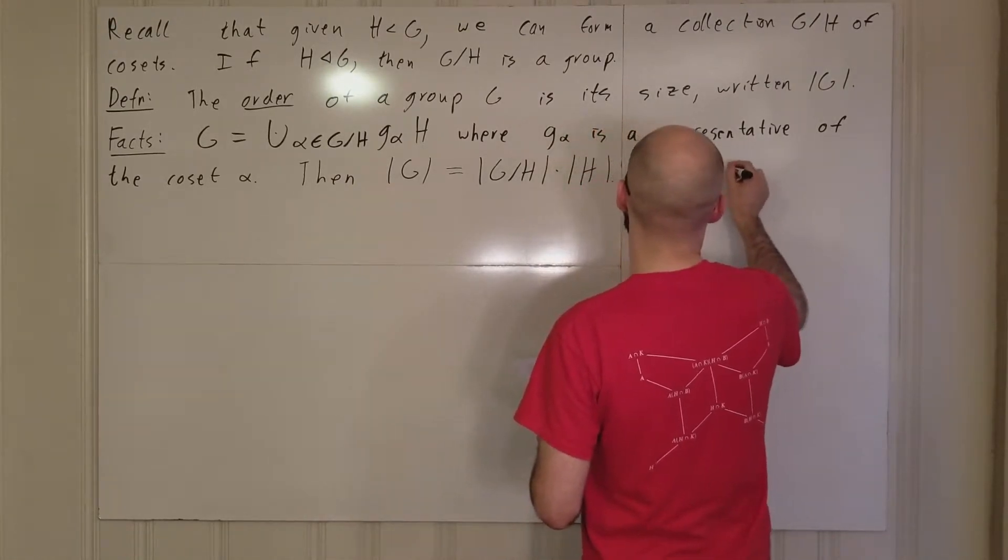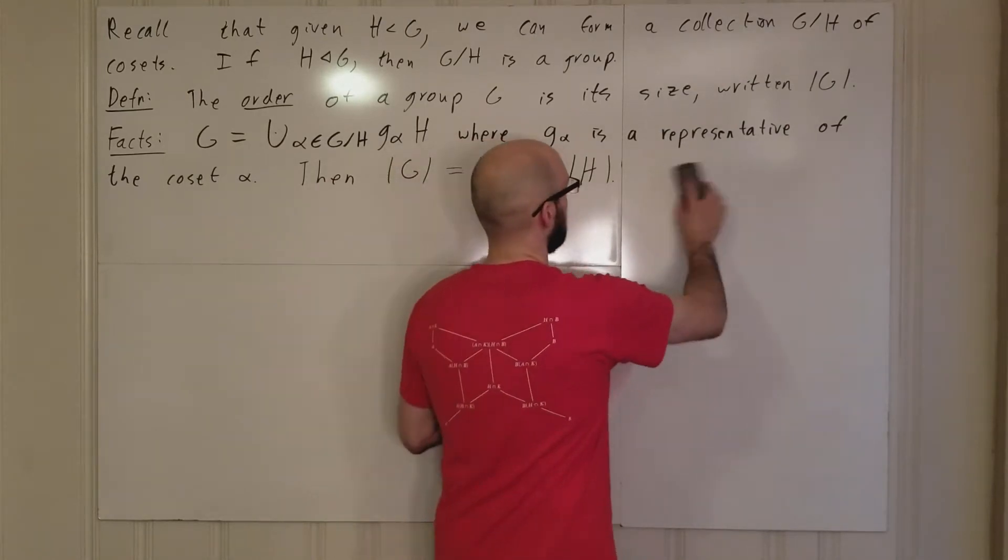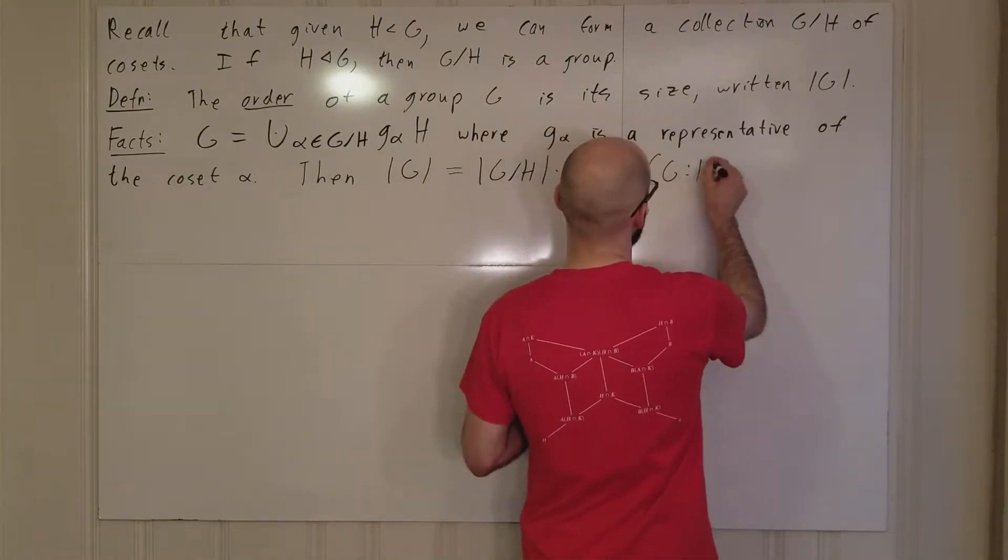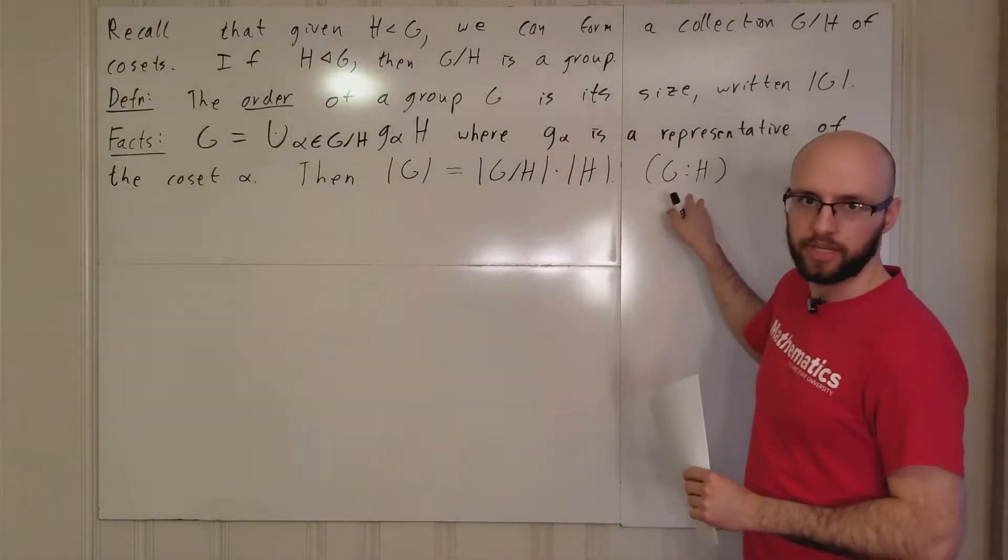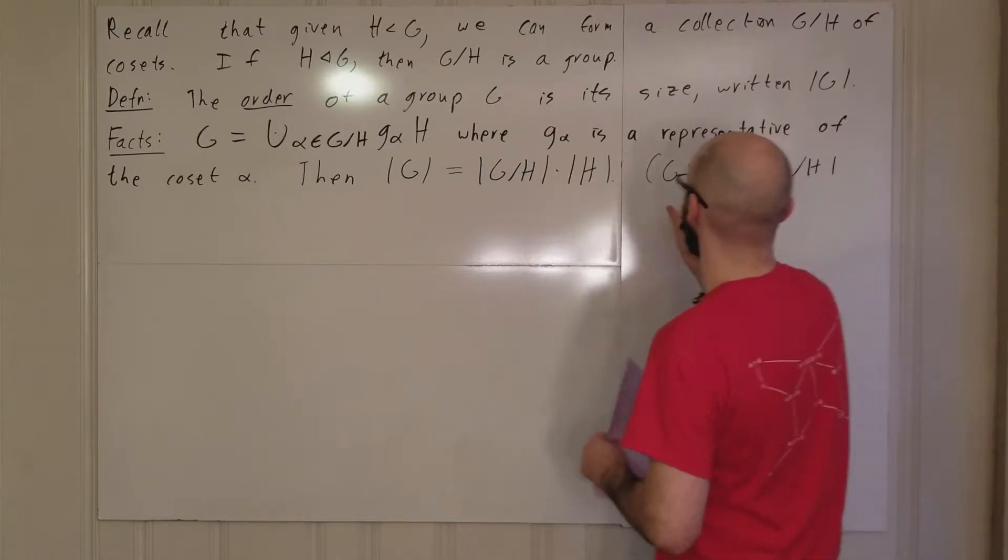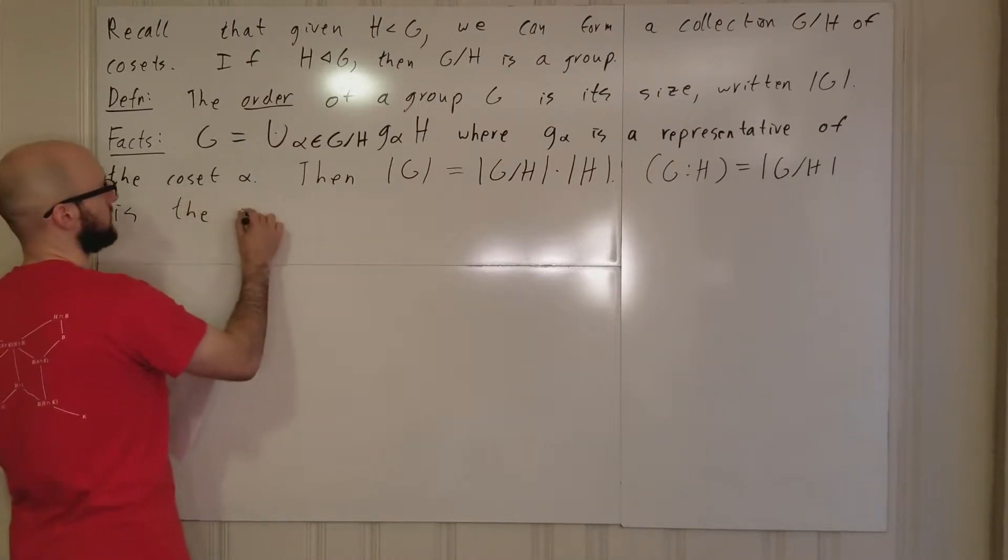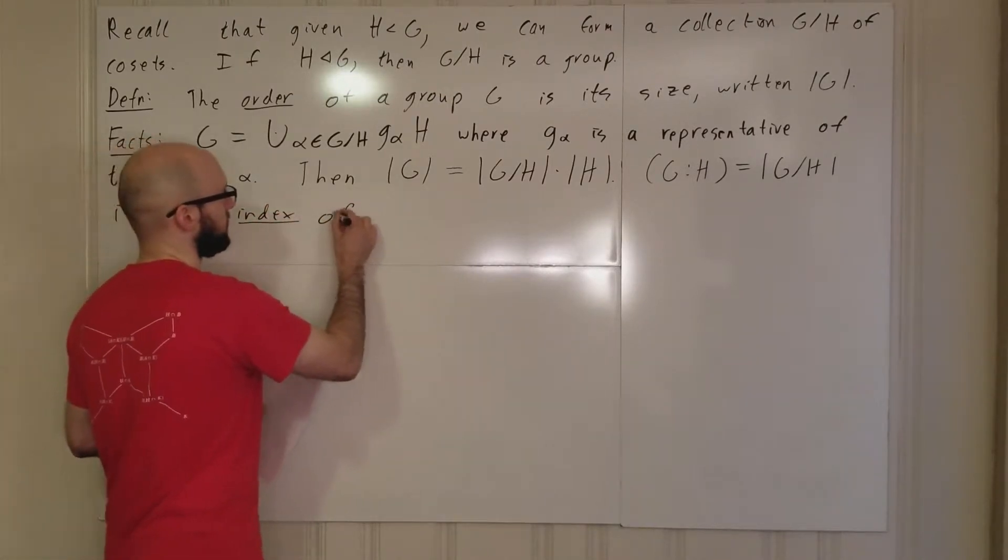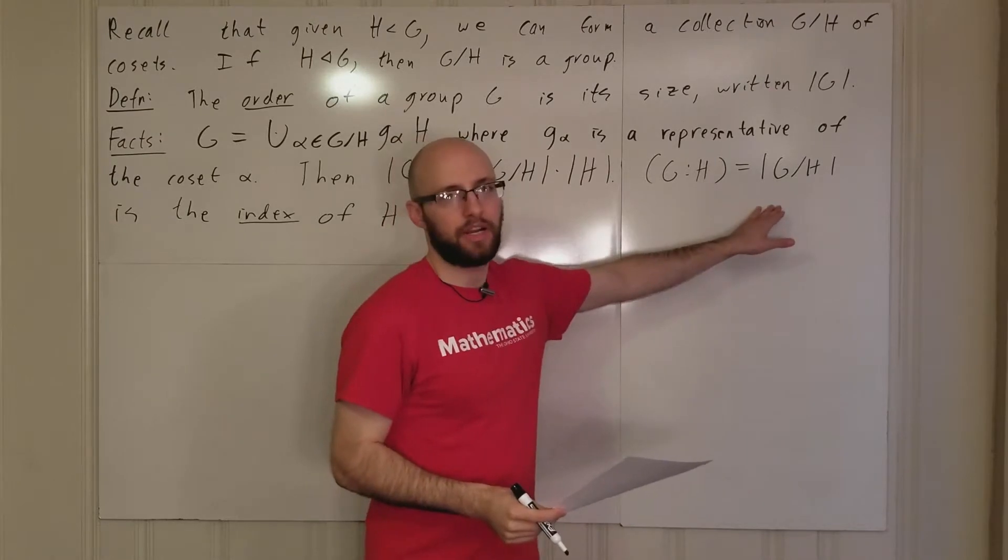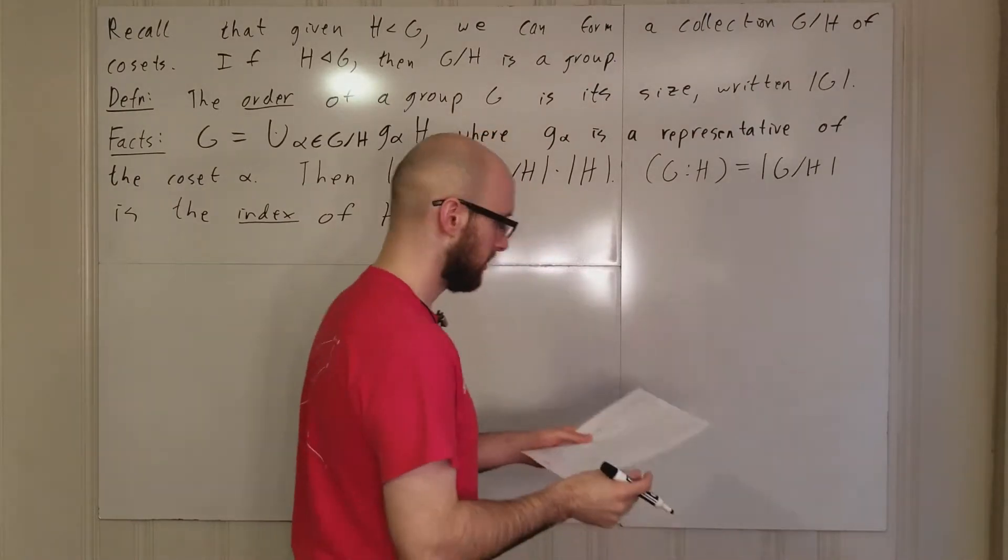We also have a definition. The number of cosets in G that we get by modding out by H, we write as (G:H), and this is the index of H in G. You're not saving a lot of writing here, but it's just notation.